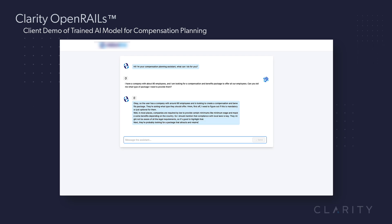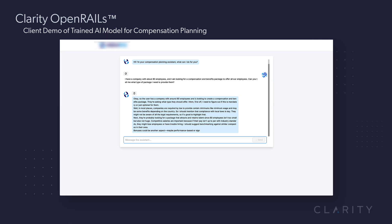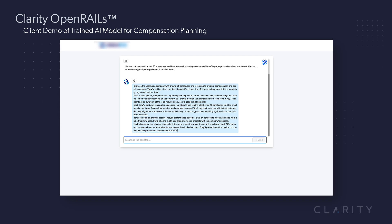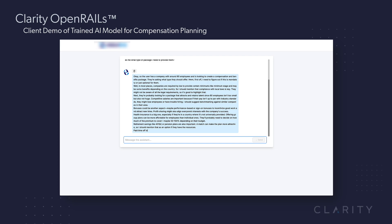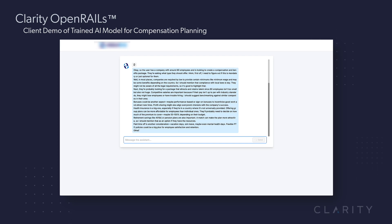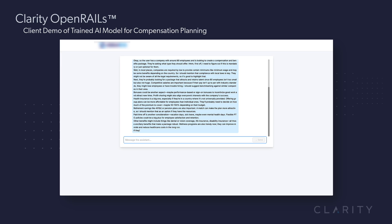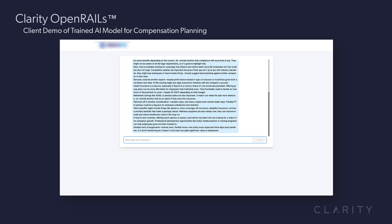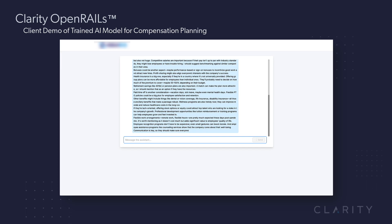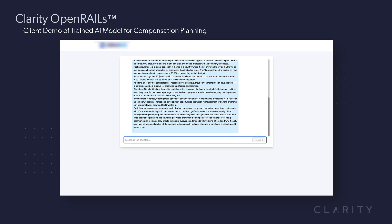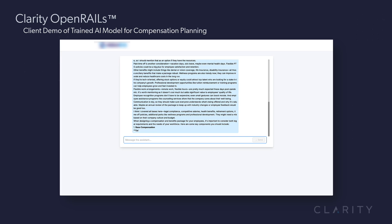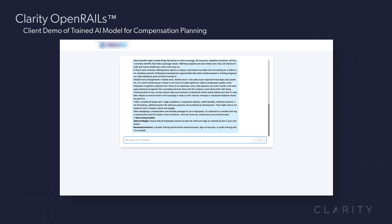As you can see, it starts to type out the verbiage it's using to help train. The user has a company with around 80 employees looking to create a compensation plan and benefits package. First, it needs to figure out what's mandatory — it talks about the law. Next, they're probably looking for a package that attracts and retains talent, since 80 employees isn't small but isn't big. So competitive salaries are probably important, and then it goes through bonuses, other aspects, and 401k. It's live, going through this verbally communicative back-and-forth iteration to help educate the sales rep on exactly what it's thinking about and why it put the package together the way it did.